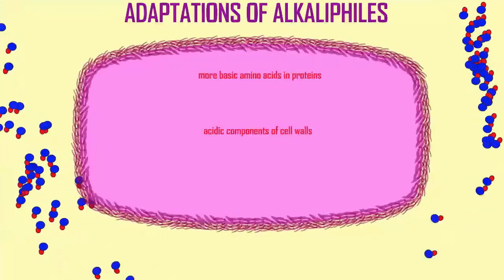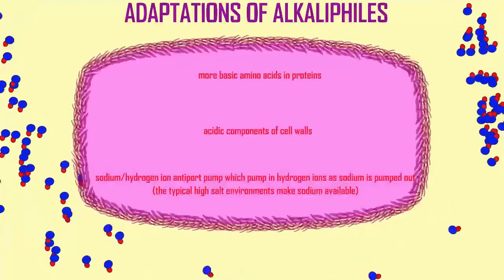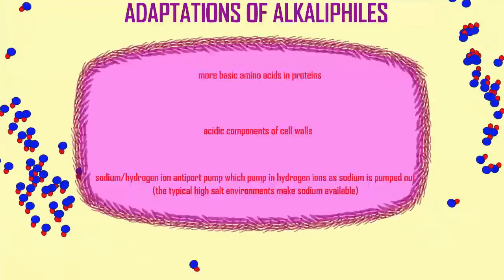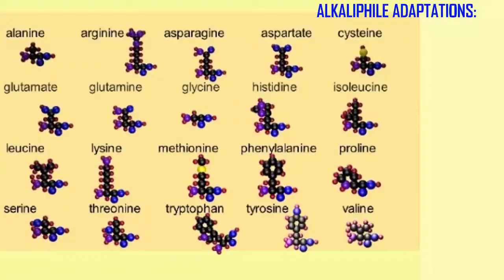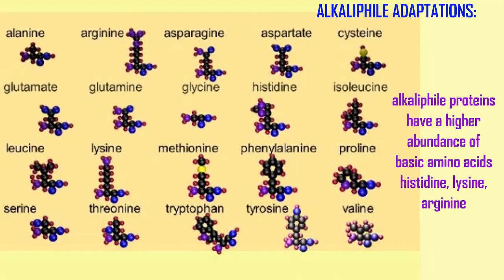The alkalophiles over-represent the percentage of the basic amino acids: lysine, arginine, and histidine. Therefore, the higher pH does not alter these amino acids in a way which would change protein shape.